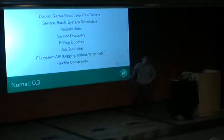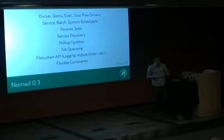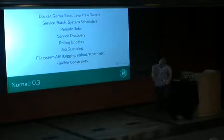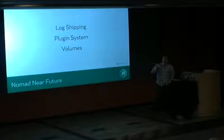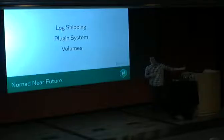Nomad 0.3 came out in January. New features include periodic jobs, job queuing, and a filesystem API that lets you read files out of running jobs. Everything I talked about today currently exists in Nomad.